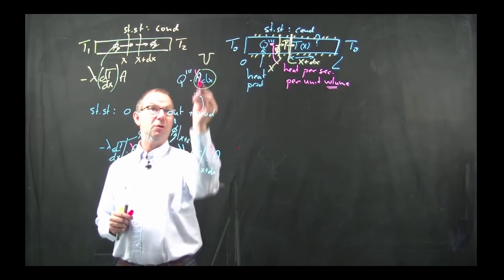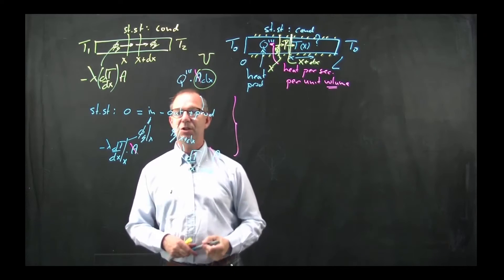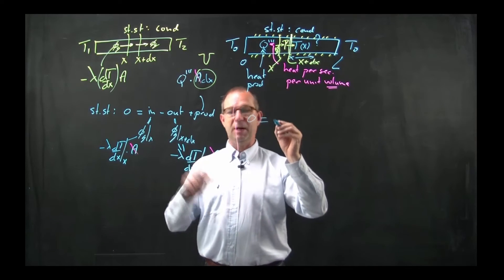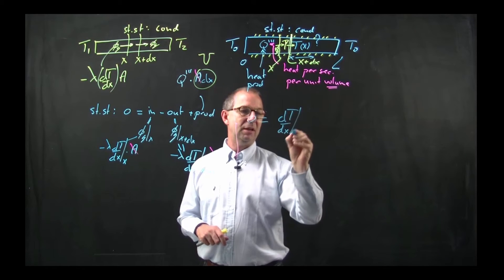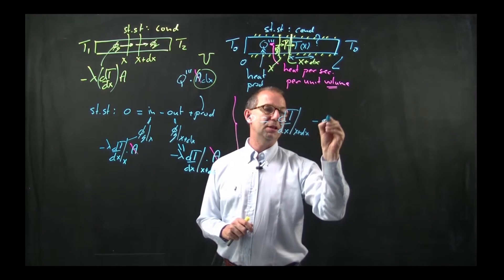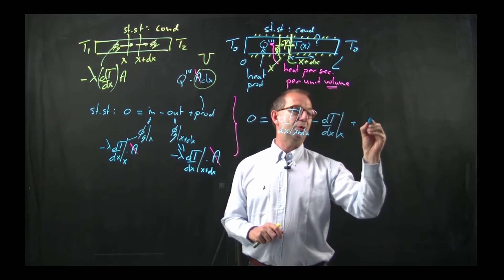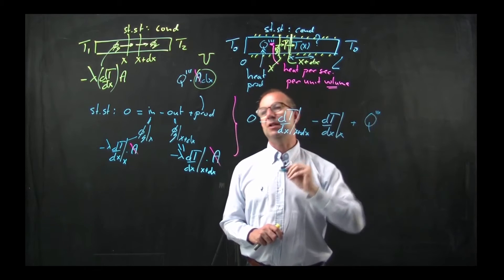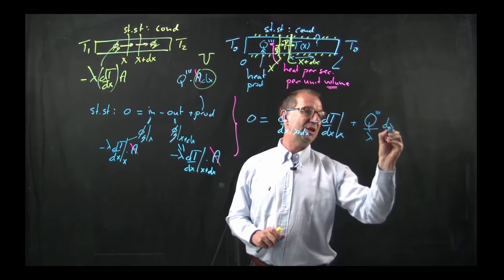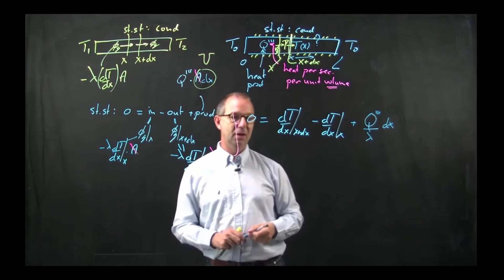What I cannot take out is lambda, because this term doesn't contain lambda, but I can divide. I can make a first easier step. This minus and this minus together make a plus, and I'm going to put that up front and divide by lambda. So dT/dx taken at x plus dx, that is this term, minus dT/dx taken at x plus the production which is Q triple dash. A is out, lambda comes under because I divided by lambda times dx.